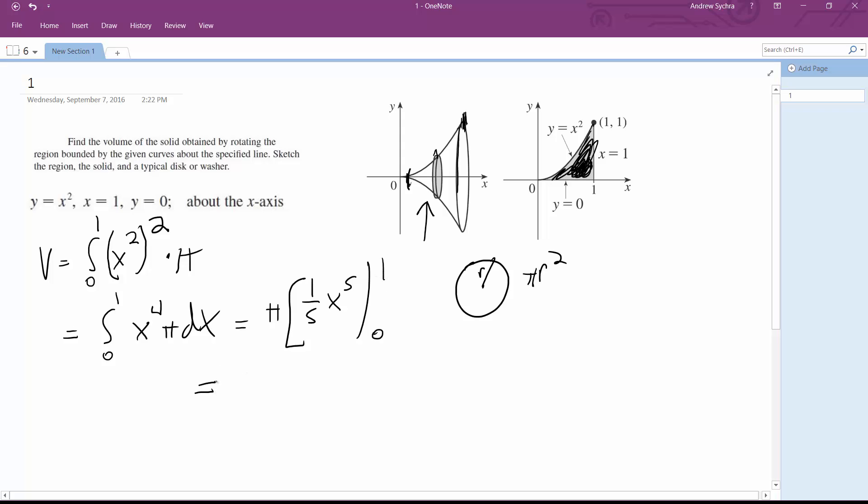Which gives us an area enclosed, or a volume, of pi over five. So that's volume. And that's it, that's how you solve it. Yay!